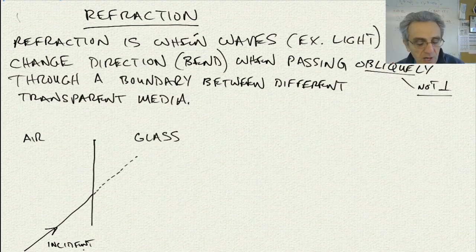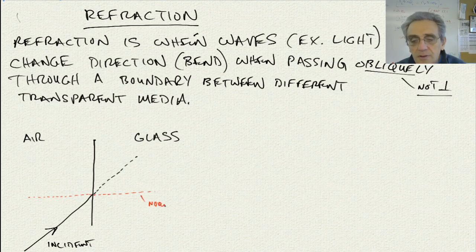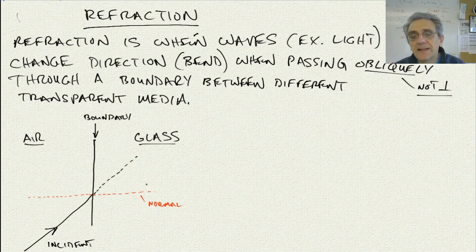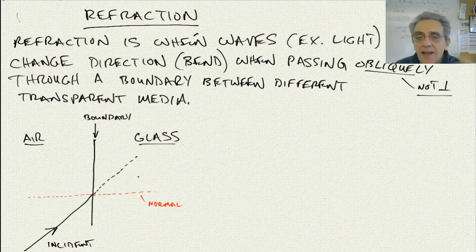Let's draw the normal here. That normal is perpendicular to the boundary — the boundary between the glass and the air. The left side is the air and the right-hand side is the glass. In order to know which direction it bends, I'm going to give two memorization techniques. The first one is called SFAN.